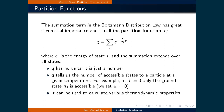The sum term in the Boltzmann distribution law has great theoretical importance and is called the partition function, or q. It is defined as the sum over i of the exponent of negative ei divided by the Boltzmann constant times the temperature, where ei is the energy of state i and the summation extends over all states. One thing to keep in mind is that q has no units — it's just a number.